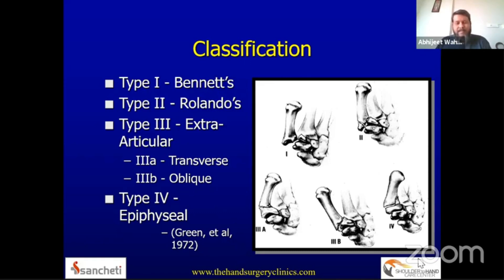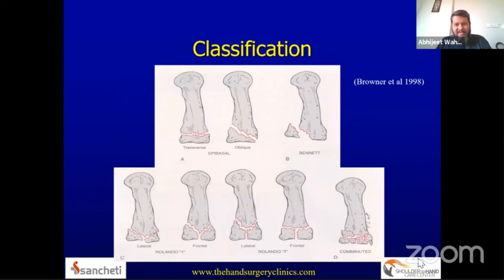Fractures of the base of the first metacarpal have been classified by the names of the scientists who described them. Green's classification categorizes them as: Bennett's (Type 1), Rolando's (Type 2), extra-articular (Type 3, subclassified as transverse and oblique), and epiphyseal fractures (Type 4). Another classification to know is the Browner classification, which describes fracture anatomy as epibasal transverse oblique, Bennett's fracture, Rolando Y or T fractures, and comminuted fractures of the base of the first metacarpal.